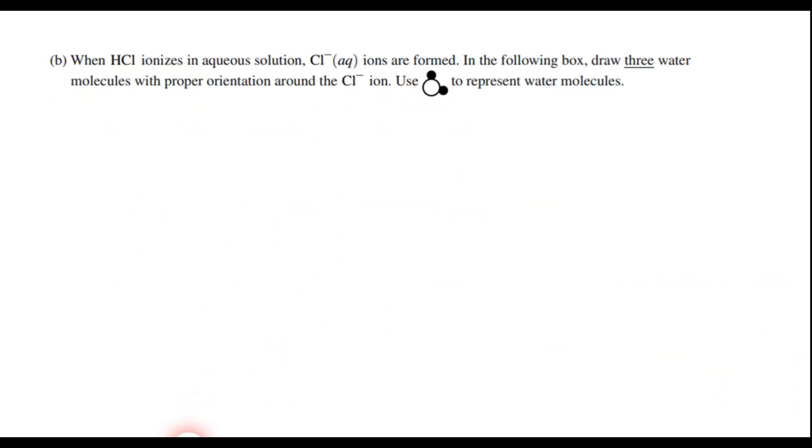Moving on to part B, the third point on this. It says we have the chloride ions formed, and it says draw three water molecules with the proper orientation around the chloride ion. Now for this, you have to remember that water is a polar molecule, and that means that water has a positive pole and a negative pole.